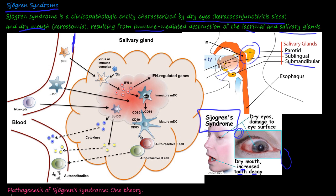The pathogenesis of Sjögren's Syndrome is not definitively established — there are theories. One theory is that a plasmacytoid dendritic cell (PDC) gets recruited into the salivary gland due to some RNA virus or immune complex.